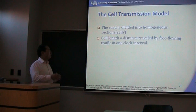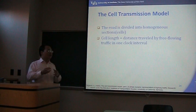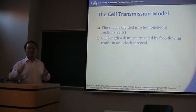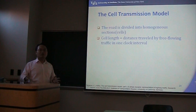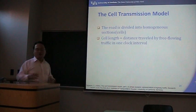However, the cell length in the Cell Transmission Model is not equal to the length of the vehicle. Instead, it is equal to the distance that a vehicle will travel in one clock interval. For example, if the speed is one meter per second and the clock interval is one second, then the cell length is one meter. If a vehicle travels ten meters per time interval, then the cell length is ten meters. To emphasize: the cell length equals the distance traveled in a time step, not the vehicle length.